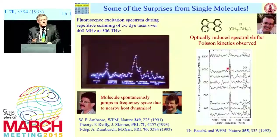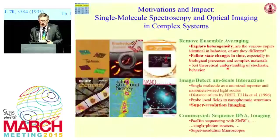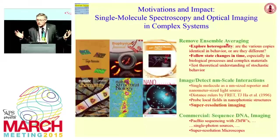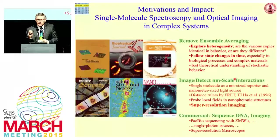The low temperature regime had a few interesting surprises, but in the mid-90s, people shifted to room temperature. Let me pause and say why we would want to do these experiments at all. We were removing ensemble averaging — able to watch individuals without having to average over billions of molecules. That let us explore heterogeneity — heterogeneity in time as well as static heterogeneity. That's one of the main reasons people still do single molecule experiments. These molecules also enable imaging and detecting of nanometer-scale interactions, because they are essentially sensitive to their very local environment around this nanometer-sized molecule, and they lead to super resolution.